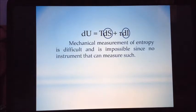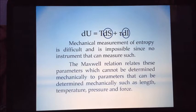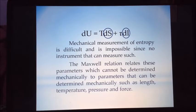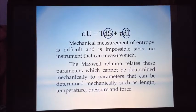In order to get du, du is equal to tds plus tau dl. In this equation, it implies that the system requires constant entropy and length. To observe constant entropy, we need to observe the system microscopically. In addition, mechanical measurement of entropy is difficult and impossible since no instrument can measure such. The Maxwell relation relates these parameters which cannot be determined mechanically to parameters that can be determined mechanically such as length, temperature, pressure, and force.